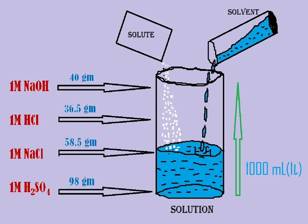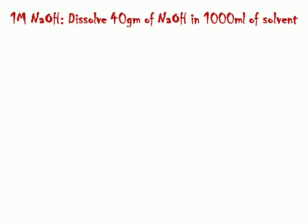Now we will see how to prepare one molar NaOH solution. For preparation of one molar NaOH solution, we have to dissolve 40 grams of NaOH in 1000 ml of solvent. Now, stepwise procedure: